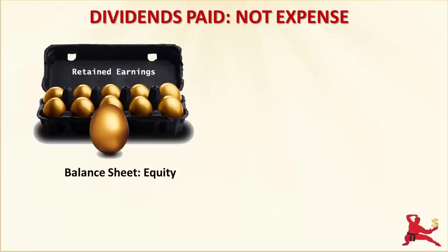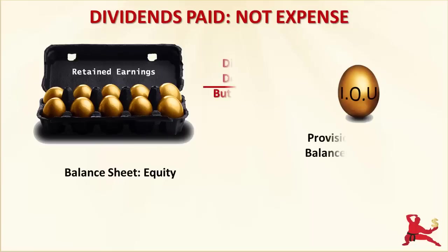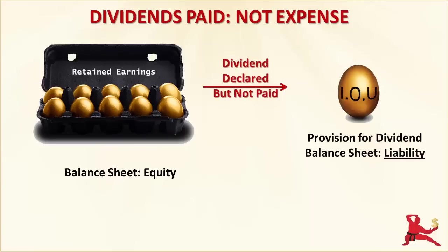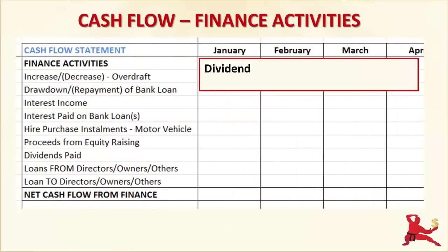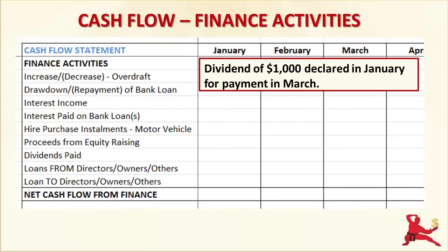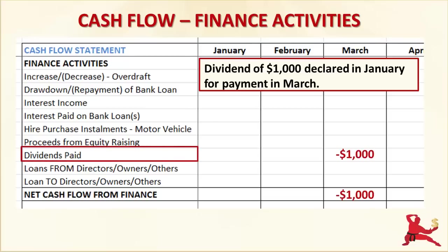Dividend payments only show in the Cash Flow Statement when the business actually pays the cash out. If a business declares a dividend but doesn't pay it until a later date, this declared dividend reduces retained earnings and becomes a liability called provision for dividend on the Balance Sheet — in other words, the business now has a debt, owing the shareholders the money until payment is made. Let's say your business declares a dividend in January for payment in March. The amount of the dividend will become a liability on your Balance Sheet in January and stay there until payment is made in March. When the dividend is actually paid in cash, the Cash Flow Statement will show the payment as a cash outflow in the Finance Activities section.